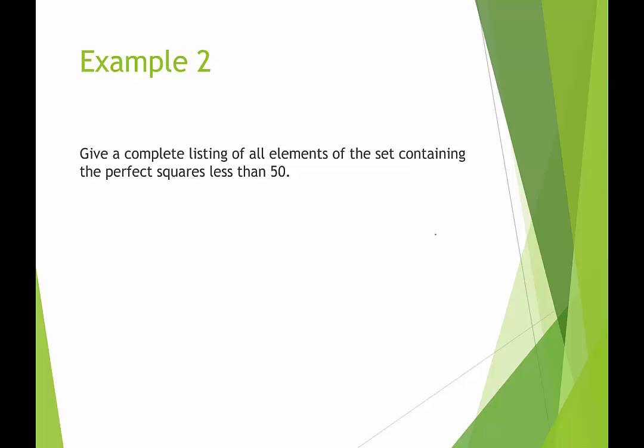In our second example we're going to give a complete listing of all elements of the set containing the perfect squares less than 50. So I might call this one S since I think I used P last time and the perfect squares would be 1, 4, 9, 16, 25, 36, and 49. So again I gave it a set name, a single capital letter, and then I followed it up with all of the perfect squares less than 50.